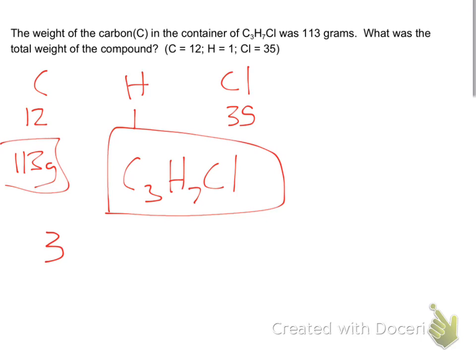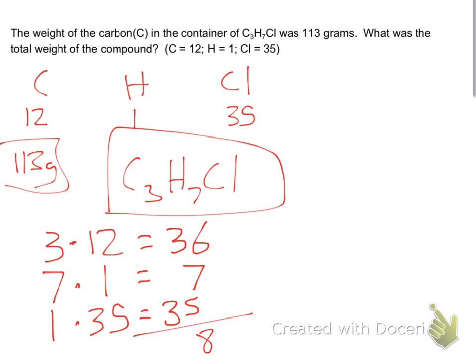We need to find the total weight of this thing. We have three times 12, we have seven times 1, and we have 1 times 35. 3 times 12 is 36, 7 times 1, and 35. So if you have that all together, what's your total weight of the compound? 13 plus 5 is 18, carry the one, 78. That's probably grams per mole, the molar mass.